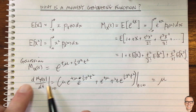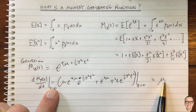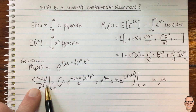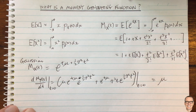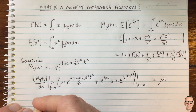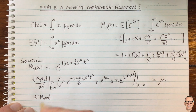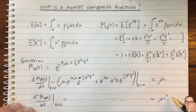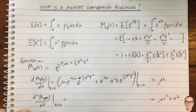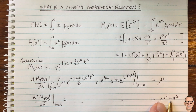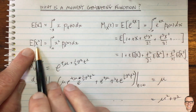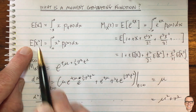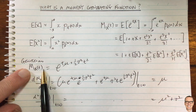When we set t equal to zero, the term containing sigma squared t disappears because it has a t factor. The remaining term gives e to the zero times mu, which equals one times mu. So the first derivative evaluated at t equals zero gives mu — confirming we recover the mean as the first moment.